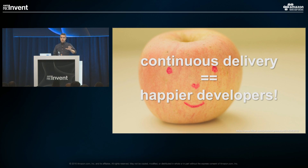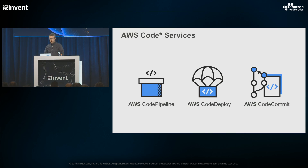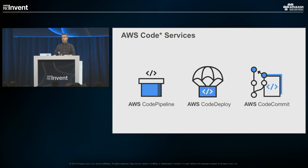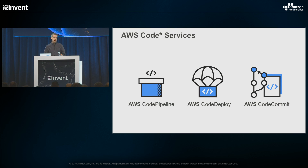Now let's talk about what has come from that into AWS services you can consume today. As part of our services, there are three developer tools: AWS CodePipeline, AWS CodeDeploy, and AWS CodeCommit. CodePipeline is essentially the AWS version of our internal Pipelines tool. CodeDeploy is us taking Apollo and rebuilding it as an AWS service. CodeCommit was built from the ground up in response to customer feedback for a hosted Git service in the cloud that is encrypted, secure, with high redundancy and durability — it lives on top of S3, DynamoDB, and our Key Management Service.